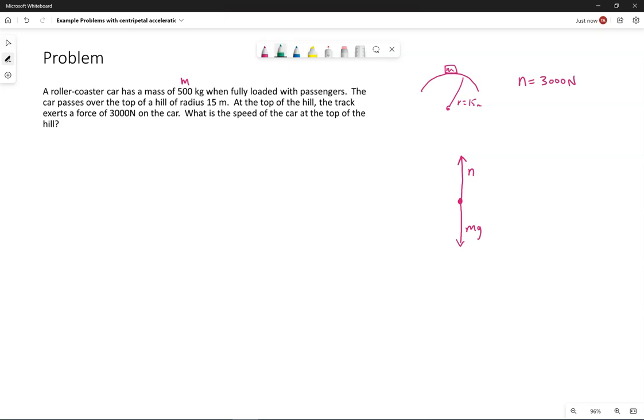But we do definitely want to keep in mind since it's going over a hill, it has a change in direction. That change in direction means there is a centripetal acceleration pointing downwards. That means the net force needs to point down.